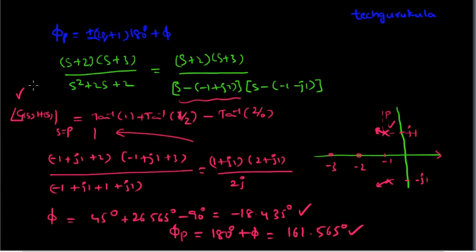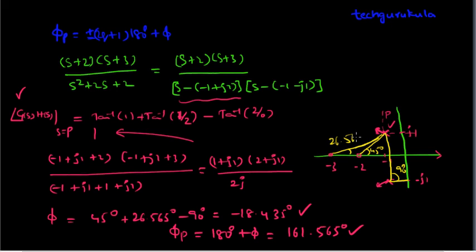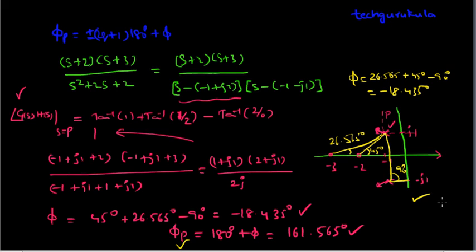This was the mathematical approach. In the graphical approach, we look at the angles made directly on the diagram: the conjugate pole to P makes 90 degrees, the zero at minus 2 makes 45 degrees, and the zero at minus 3 makes 26.565 degrees. So phi equals (26.565 plus 45) minus 90, which is minus 18.435 degrees — the same result. This confirms the graphical method gives identical answers.